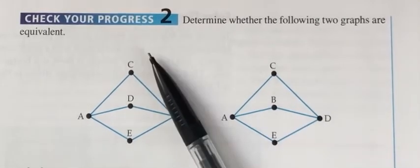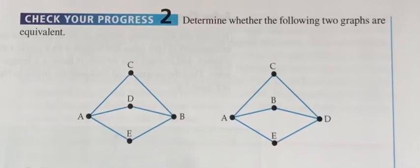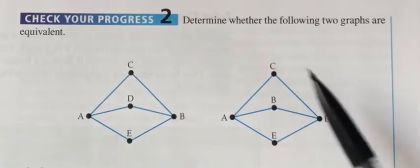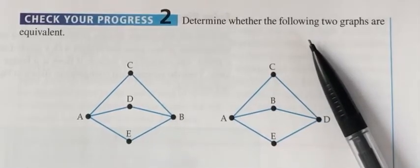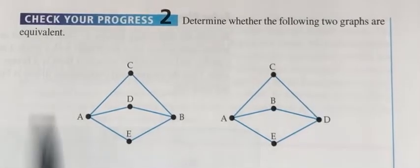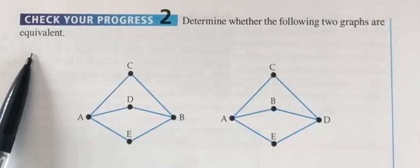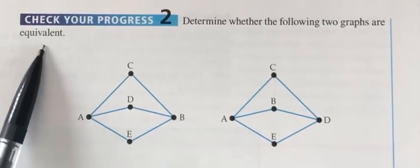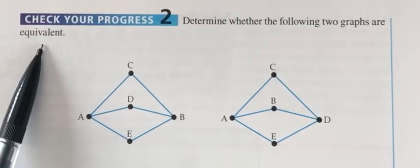This is Check Your Progress 2 on page 233, section 5-1. Determine whether the following two graphs are equivalent. So again, if they're equivalent, they have the same vertices and the same edges, the same connections.